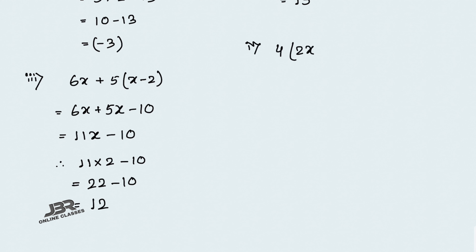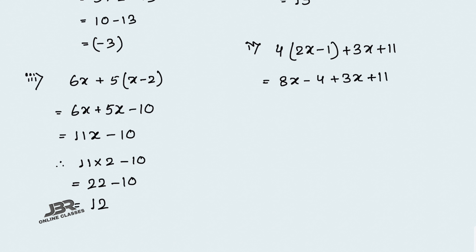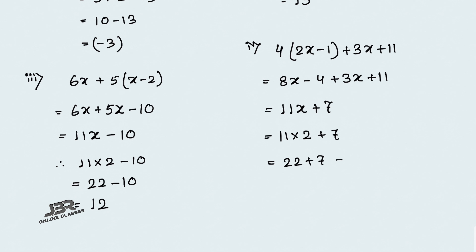Number 4: 4(2x minus 1) plus 3x plus 11. Expanding: 8x minus 4 plus 3x plus 11 equals 11x plus 7. Now with x equals 2: 11 into 2 plus 7 equals 22 plus 7 equals 29.